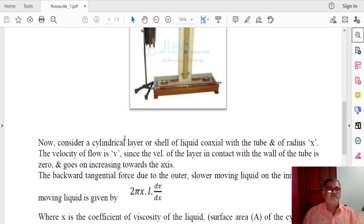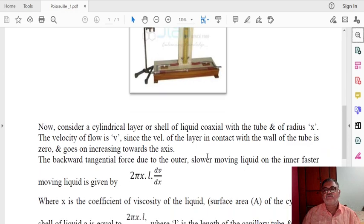We will consider a cylindrical layer of liquid coaxial with the tube having radius X. The velocity of flow is V. Since the velocity of the layer in contact with the walls of the tube is zero and goes on increasing towards the axis.